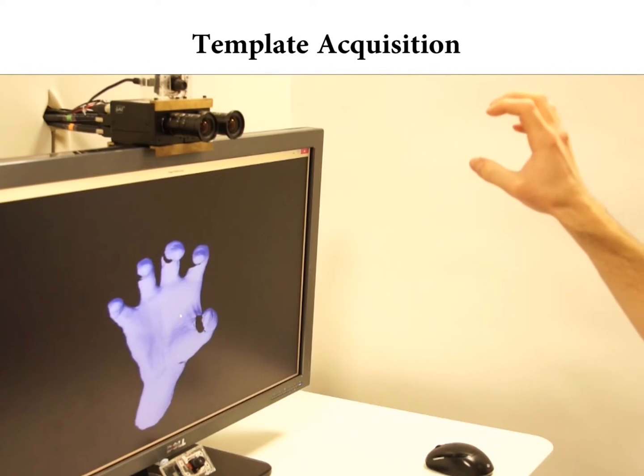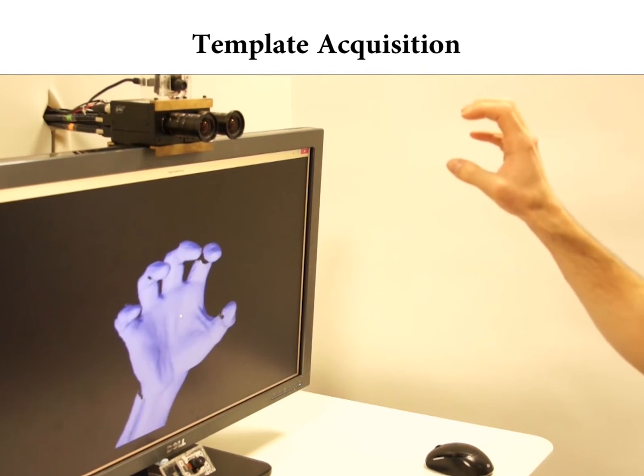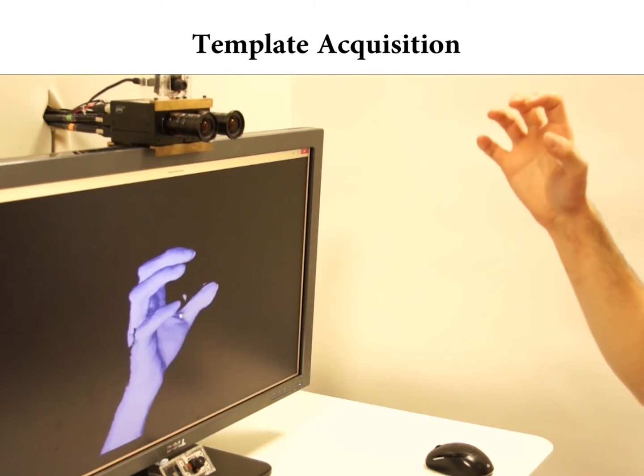Our deformation model is built from scratch for each object in under a minute. In this scenario, we generate the model of a human hand.